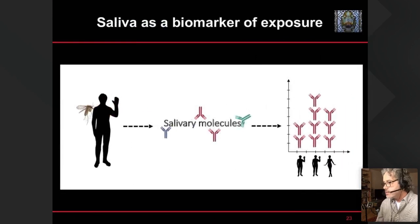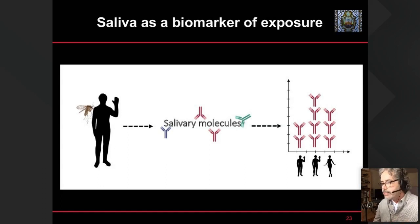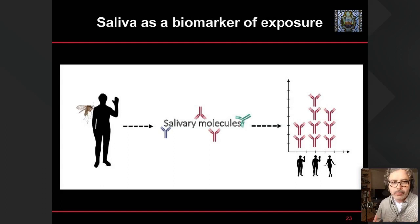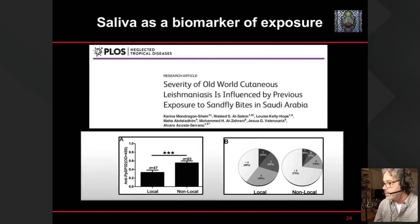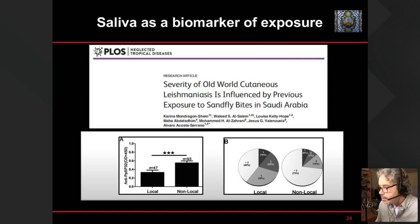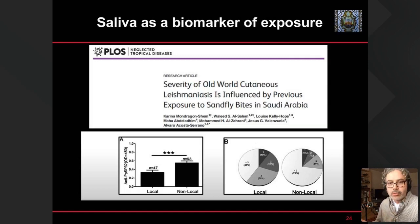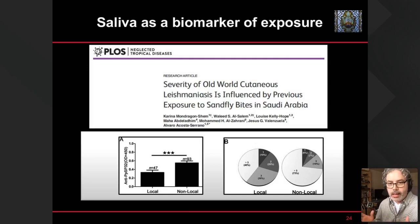The antibody response is seasonal — when heavily exposed to bites, we develop antibodies; when there is an intervention, those antibody levels should drop. If they don't drop, the intervention isn't working. This complements entomological assessment of vector control. We collaborated with the lab of Jesus Valenzuela, who supplied markers for Phlebotomus papatasi. For example, we found that local Saudi individuals are less exposed compared to non-local migrant workers in construction or farms, who have higher antibody levels and tend to develop more severe leishmaniasis as a result.